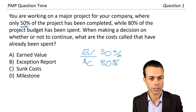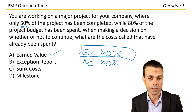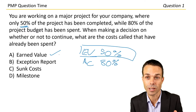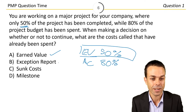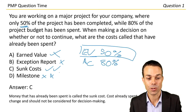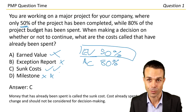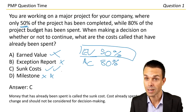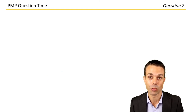It's not a costs question then — it's a decision-making one. It's not earned value, even though it looks like it. It's the sunk costs. And we don't look at these when making decisions on whether to continue the project because it's already been spent. So it's not the exception report, not milestones — let's go with letter C. Money that's already been spent is called the sunk cost. Cost already spent cannot change and should not be considered for future decision-making. That's also very hard to do in practice psychologically, so keep that in mind in the real world.